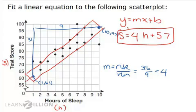If this was a multiple choice problem, you would try to find an answer choice that is closest to s equals 4h plus 57. So now you know how to fit a linear equation to a scatter plot.